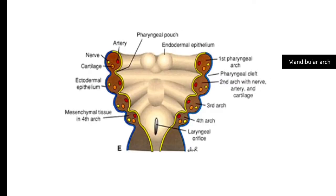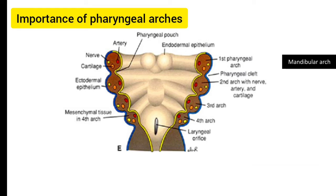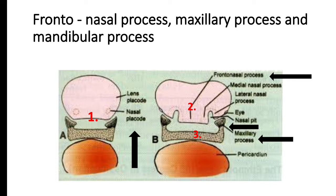Around the fourth week of intrauterine life, in the region of our head and neck, six pharyngeal arches appear, out of which the fifth one disappears as soon as it appears, so in total we can see five pharyngeal arches. The first pharyngeal arch is called the mandibular arch and it is responsible for the development of the naso-maxillary complex. Pharyngeal arches give rise to the connective tissues, skeletal units, and soft tissues in the region of head and neck.